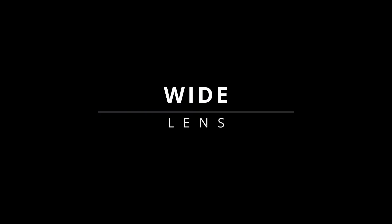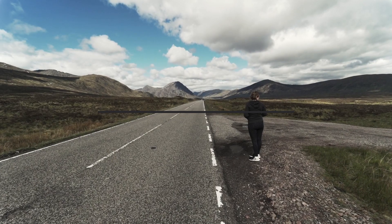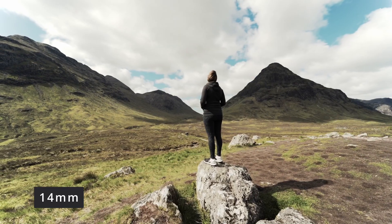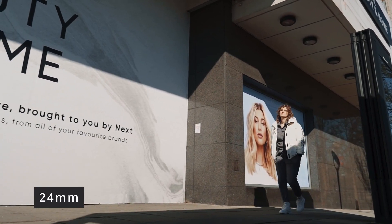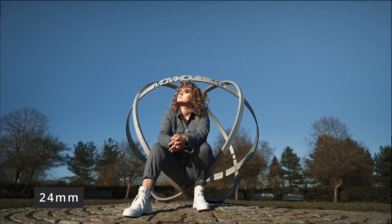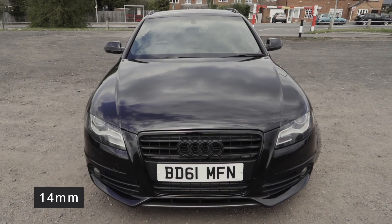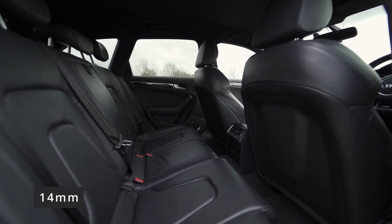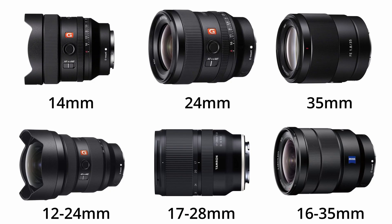Let's start with wide lenses — perfect for landscape, architecture, and even portraits when you want a wider field of view and more in your frame. But you have to be careful because they create distortion when used too close to the subject. The most popular focal lengths here are 16, 20, 24, and 35 millimeters.